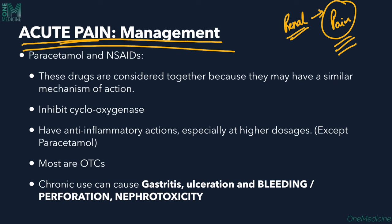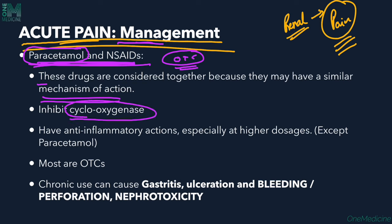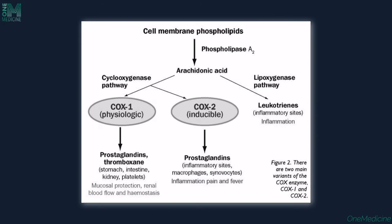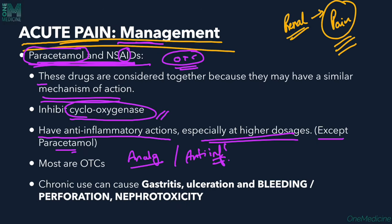Paracetamol and NSAIDs are the most commonly used pain management medications. They may share a similar mechanism of action — inhibition of cyclooxygenase — though paracetamol's mechanism is not exactly the same. They have anti-inflammatory actions, especially at higher doses, except paracetamol which is more analgesic than anti-inflammatory. Chronic use can cause gastritis, ulcerations, bleeding, perforation, and nephrotoxicity.